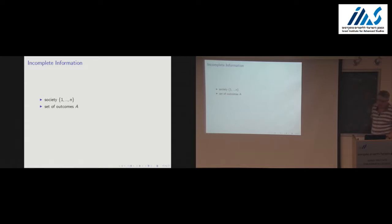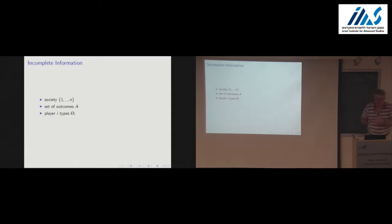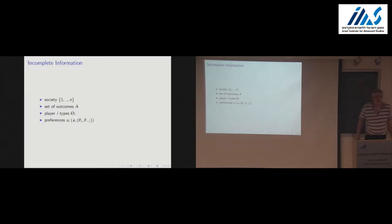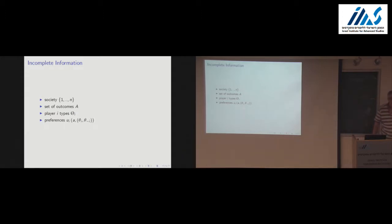We're going to have the same society and the same set of outcomes, but now with incomplete information. For each player i there will be some set of types theta_i — think of everything as finite. Player i will have preferences over outcomes where those preferences may depend on his own type and also on other players' types. An example I'll give later is allocating a single good with interdependent values, where the desired outcome depends on both your own type and what others know. I'm allowing for interdependence.